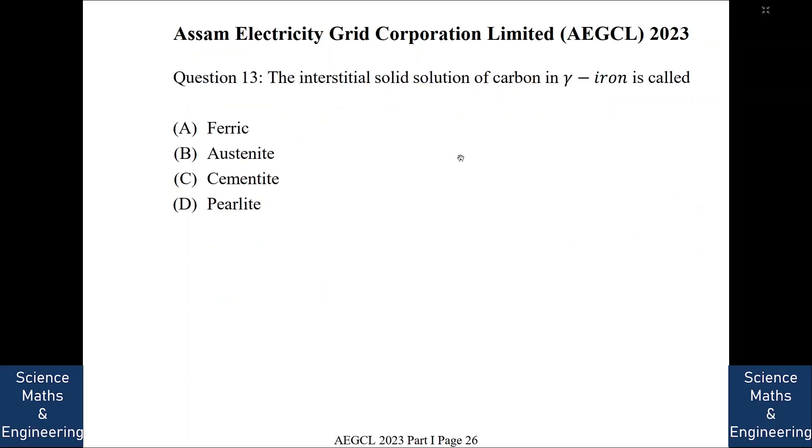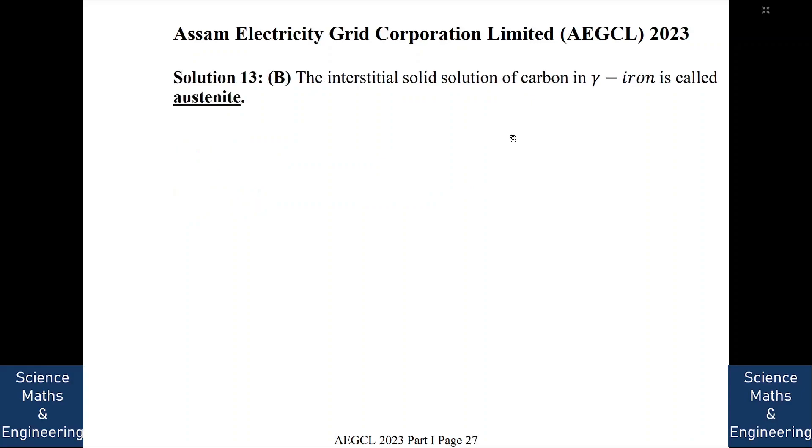The interstitial solid solution of carbon in gamma iron is called. So it is called austenite. Austenite is the gamma iron in gamma iron carbon diagram. So it is the interstitial solid solution of carbon in iron. So we will go to the next question.